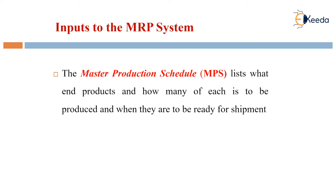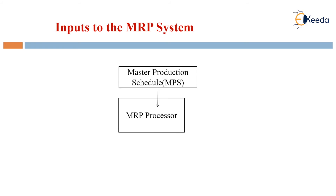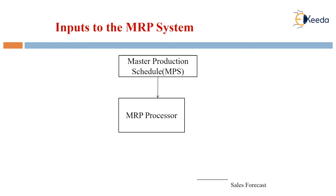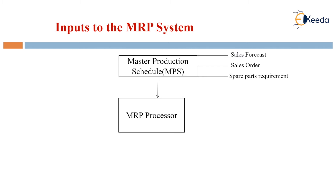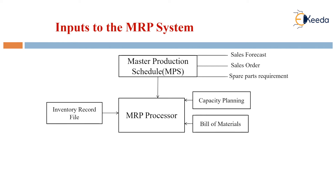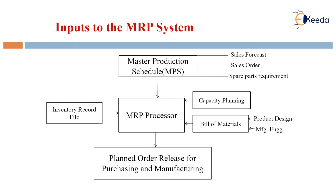The MRP processor is obtained from the MPS, or master production schedule, which is in turn obtained from the sales forecast, sales orders, and spare part requirements. Based upon capacity planning, the bill of materials, and the inventory record file, the MRP processor utilizes all this data.